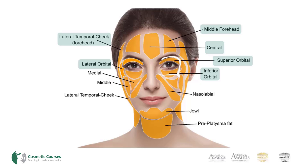Moving down towards the nose, we see the nasolabial fat compartment. This area is oblong in shape and lies anterior to the medial cheek compartment and overlaps the jowl fat. Interestingly, it has been found in a study from 2012 that the volume of this compartment remains similar despite age or gender.